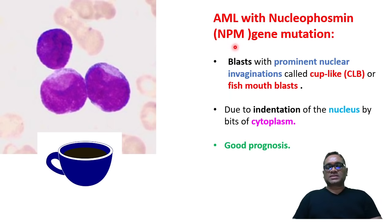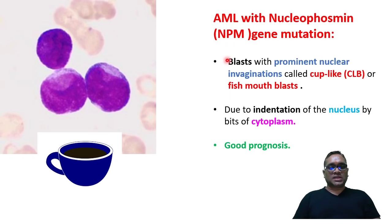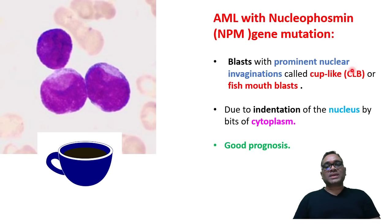What is characteristic of this mutation? You are going to see the blast cells which will be having prominent nuclear invaginations, called cup-like or fish mouth blasts.